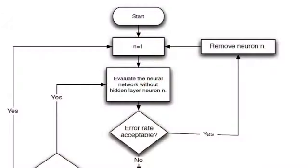We will begin by looking at how we implement the selective pruning algorithm. Here you see the top part of the selective neural network pruning algorithm. We start, we set n equal to 1. N is equal to the neuron that we are considering removing. We evaluate the neural network without the hidden layer neuron n. Then we make a decision. Is the error rate acceptable?